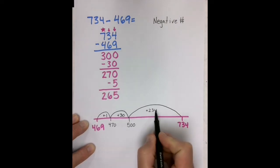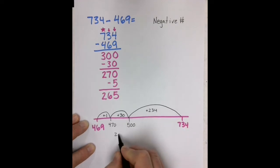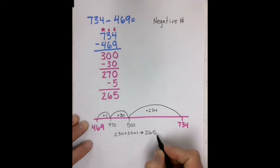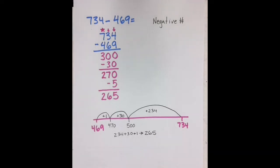When I combine my total, I would get 234 plus 30 plus 1, which is 265. So I can verify that my answer is correct.